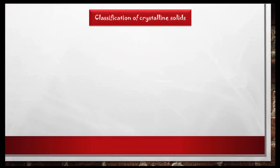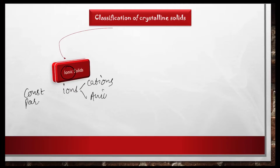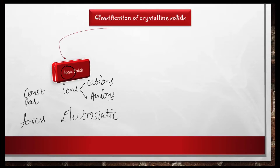Crystalline solids are classified into four major categories. The first category is ionic solids. The name itself tells us everything — ionic means the constituent particles in ionic solids are going to be ions: two types, cations and anions. Since there is a cation and anion with opposite charges, there is electrostatic force of attraction between the particles in ionic solids.